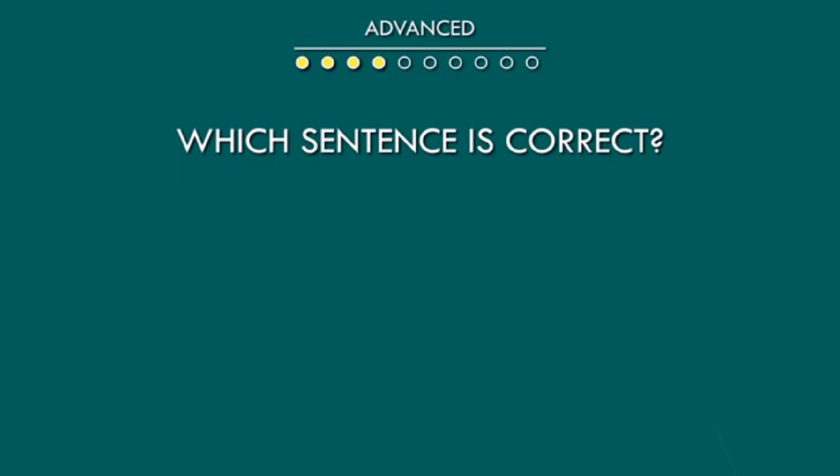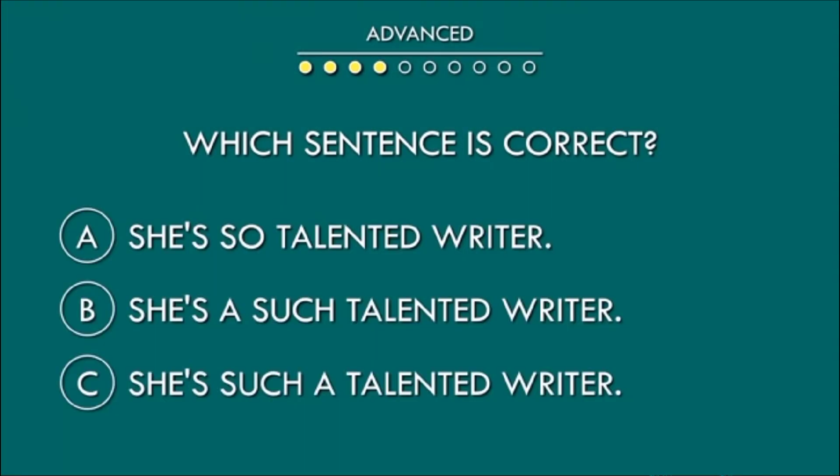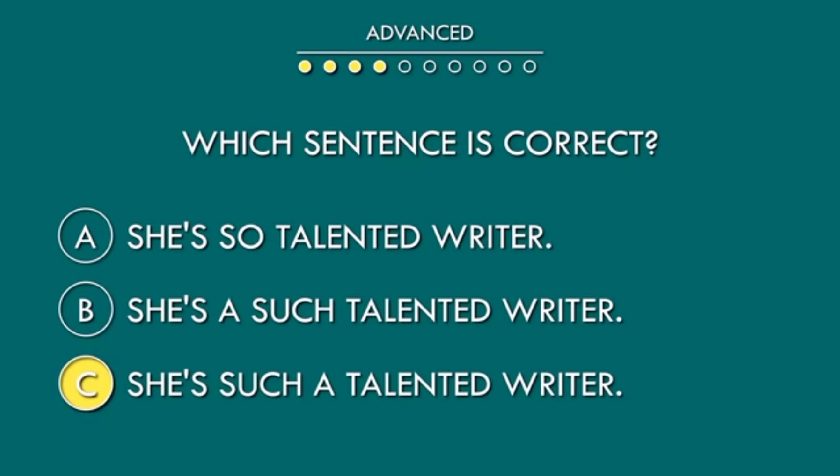Which sentence is correct? A: She's so talented writer. B: She is a such talented writer. C: She's such a talented writer. C is the correct option.